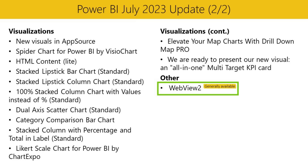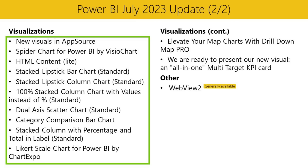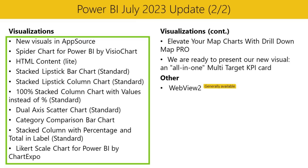In the other section, you'll find that WebView2 is now GA. We also have some exciting new updates in the visualization section. New visuals available on AppSource this month include SpiderChart for Power BI by VisioChart, HTML Content Lite, Stacked Lipstick Bar Chart, Standard Stacked Lipstick Column Chart, Standard 100% Stacked Column with Values Instead of Percent, Standard Dual Axis Scatter Chart, Standard Category Comparison Bar Chart, Stacked Column with Percentage and Total in Label, and Standard Likert Scale Chart for Power BI by ChartExpo. Updated visuals this month are Drilled on Map Pro and Multi-Target KPI Card.